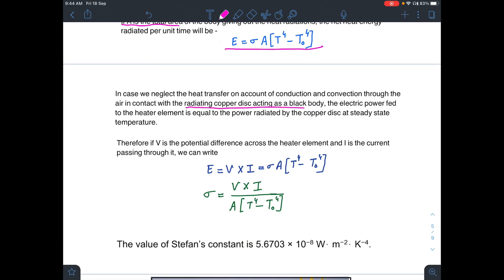In your experiment, the radiating copper plate is acting as a black body. If we neglect the heat transfer on account of conduction and convection through the air in contact with the black body, the electric power fed to the heater element is equal to the power radiated by the copper disk at steady state temperature.